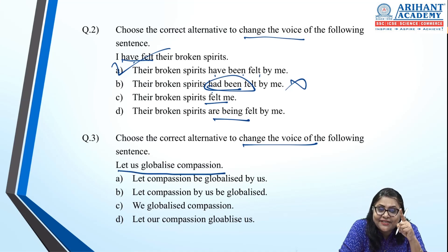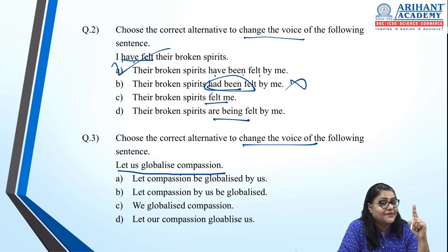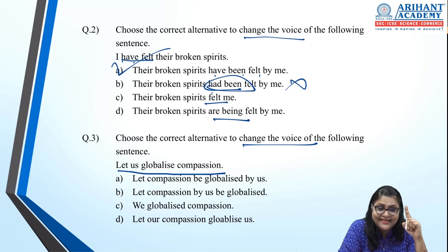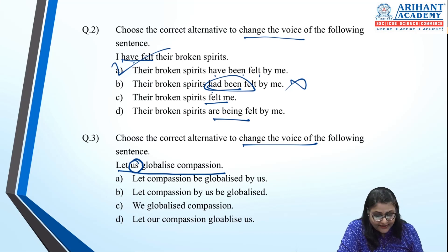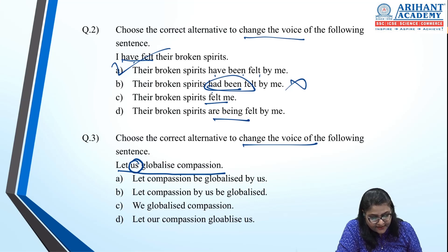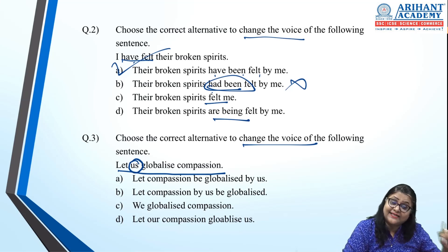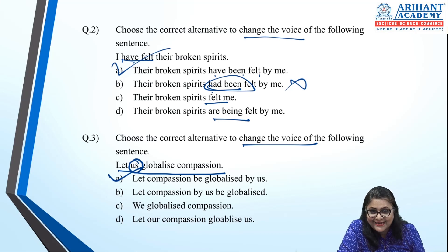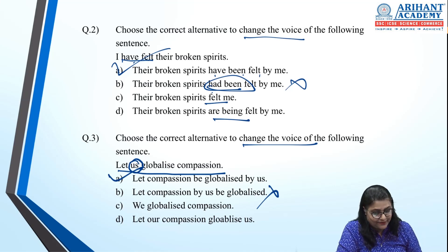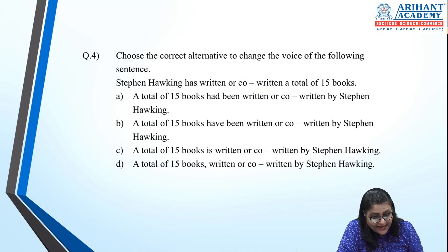Next: 'Let us globalize compassion.' This is an imperative sentence. In passive: 'Let compassion be globalized by us' — the first option is correct.